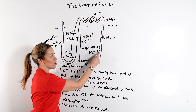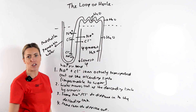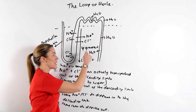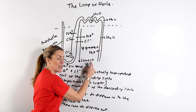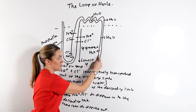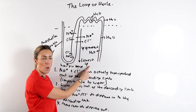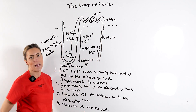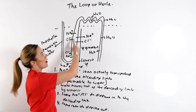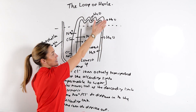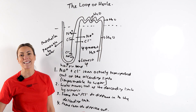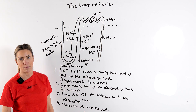So even at the end of the collecting duct, water is still moving out by osmosis and will still be getting reabsorbed into the bloodstream, because you've got the lowest water potential at the bottom of the medulla. Even though the filtrate has a low water potential, it's not as low as the lowest water potential down in the medulla. So water will continue to move out by osmosis along the DCT and all along the collecting duct. That principle is known as the counter current multiplier.